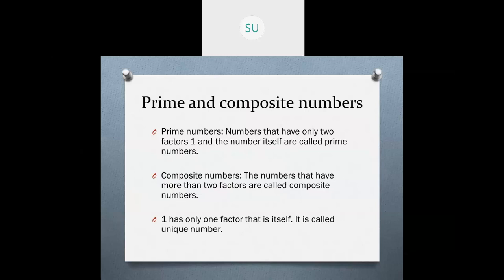Now coming to composite numbers. Numbers that have more than 2 factors are called composite numbers. The examples we saw — 12, 30, 15 — these are all composite numbers. Now coming to 1: 1 has only 1 factor, which is itself. So that is why it is called a unique number.